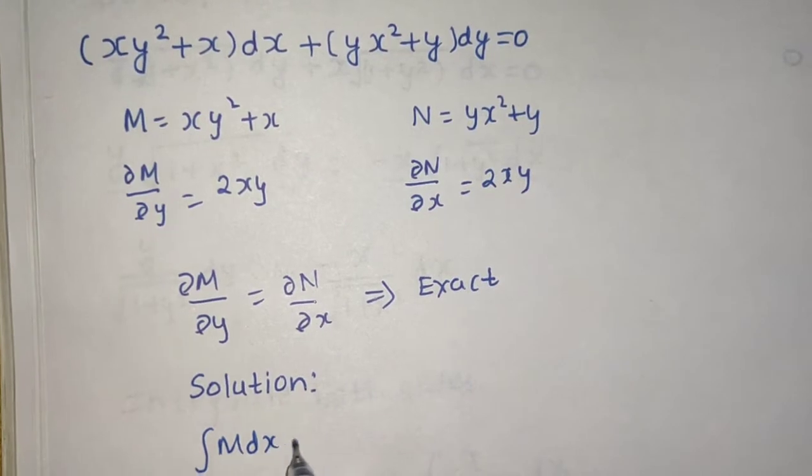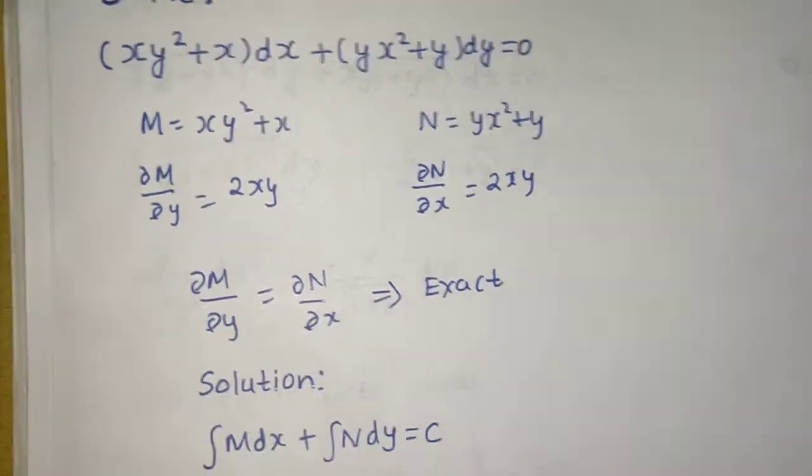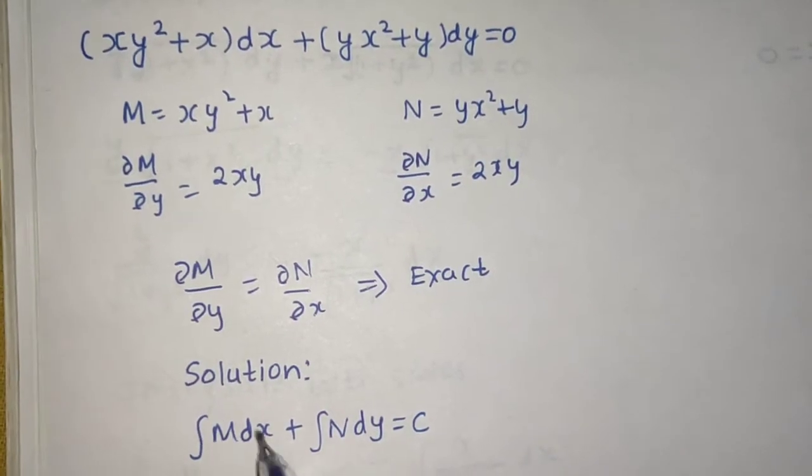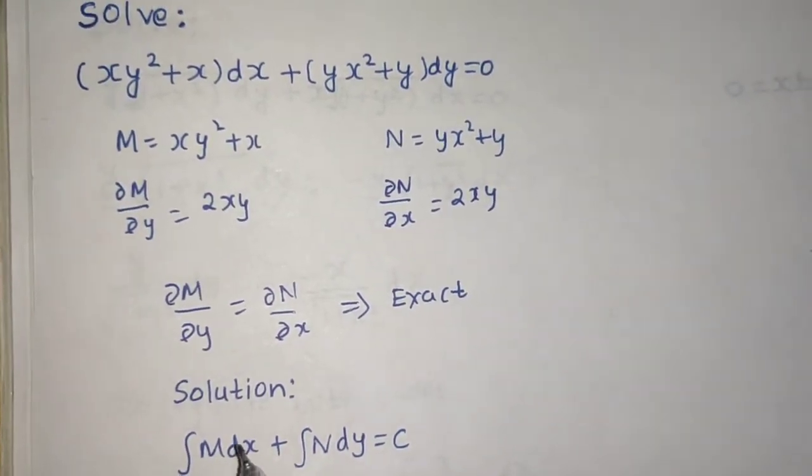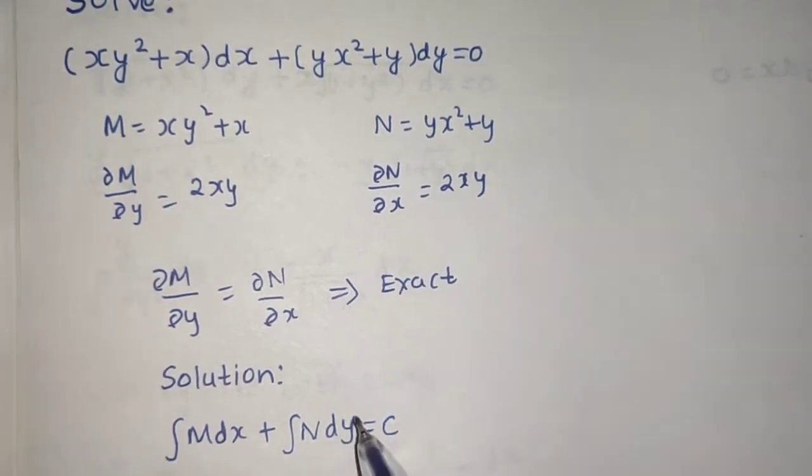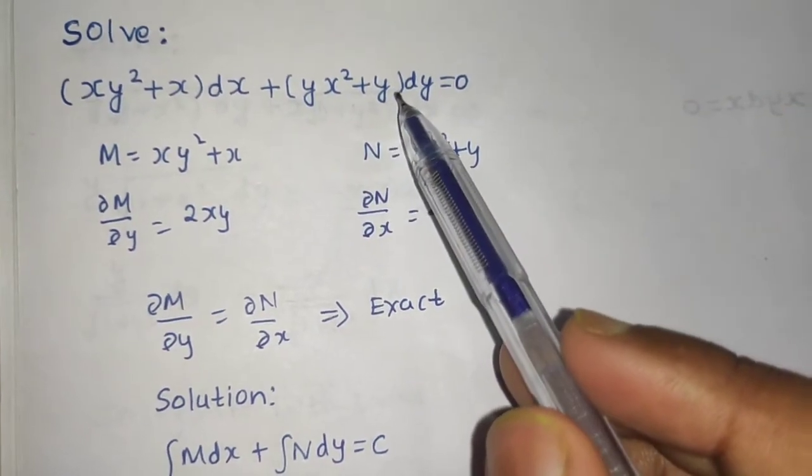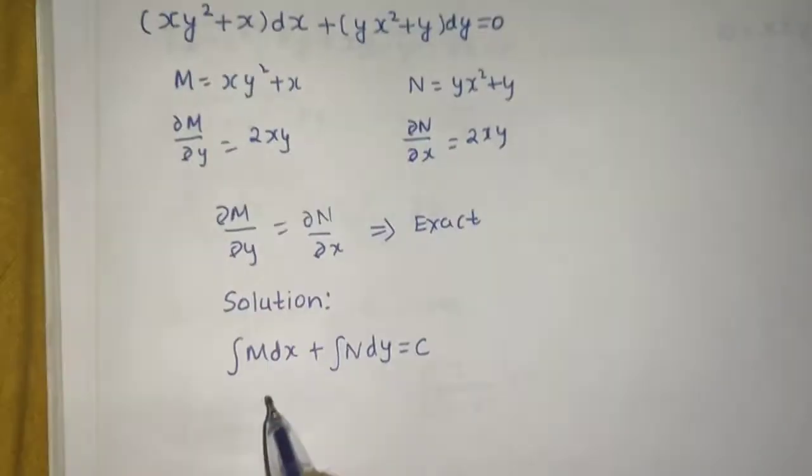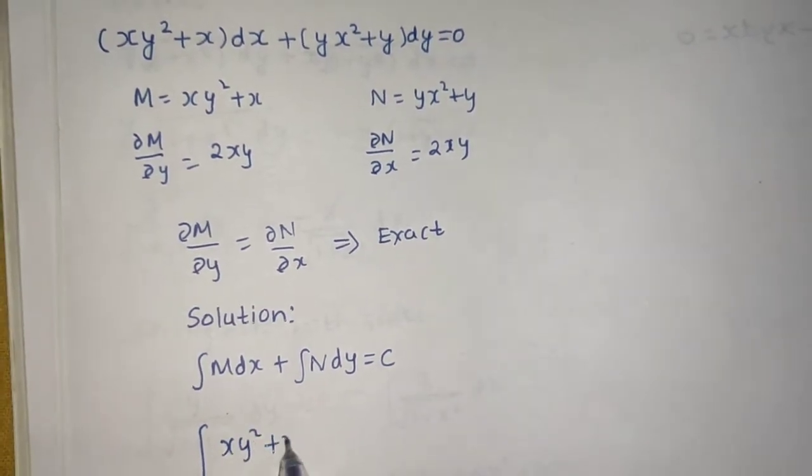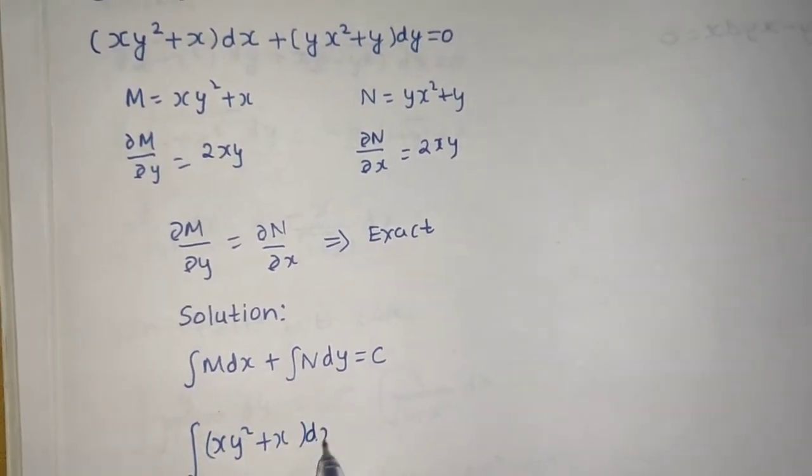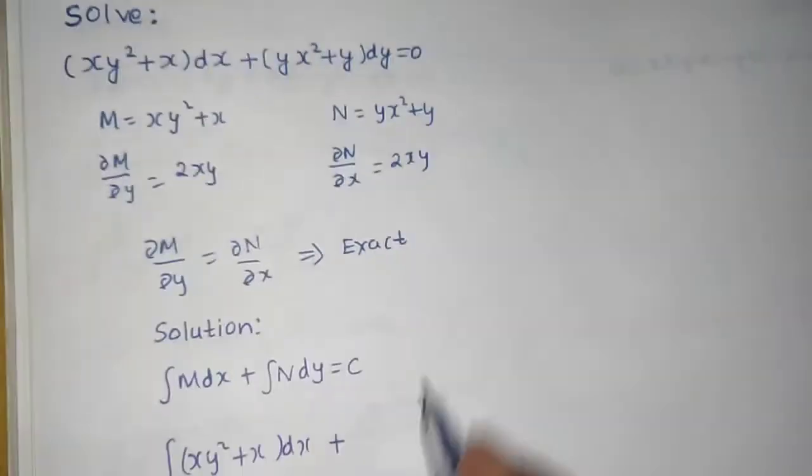Now in this integral you will differentiate taking y as a constant, and in this integral you will take only those parts of N which have only y or a constant. So xy² + x dx and here the part of N which has only y: y dy. Not x²y because it has both x and y. This equals to C.